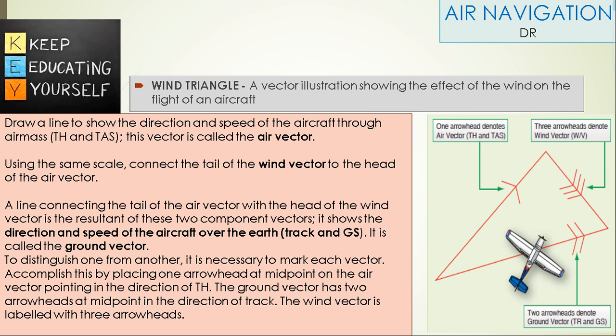Using the same scale, connect the tail of the wind vector to the head of the air vector, represented by three arrows. A line connecting the tail of the air vector with the head of the wind vector is the resultant of these two components. It shows the direction and speed of the aircraft over the earth—that will give you track and ground speed. It is called the ground vector, represented by two arrowheads.